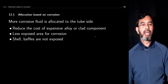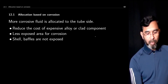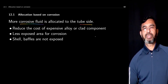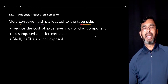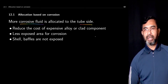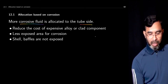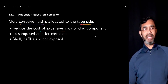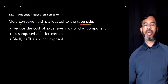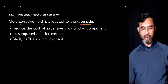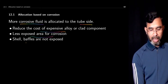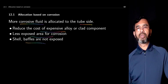When considering corrosion, the more corrosive fluids are typically allocated to the tube side, because on the tube side there is much less area of exposure to the fluid. This reduces the cost of expensive alloys, since if you put the corrosive fluid on the shell side, many different components must be constructed using that special alloy, which will be costly. There is also less exposed area for corrosion, and the shell and baffles are not exposed.